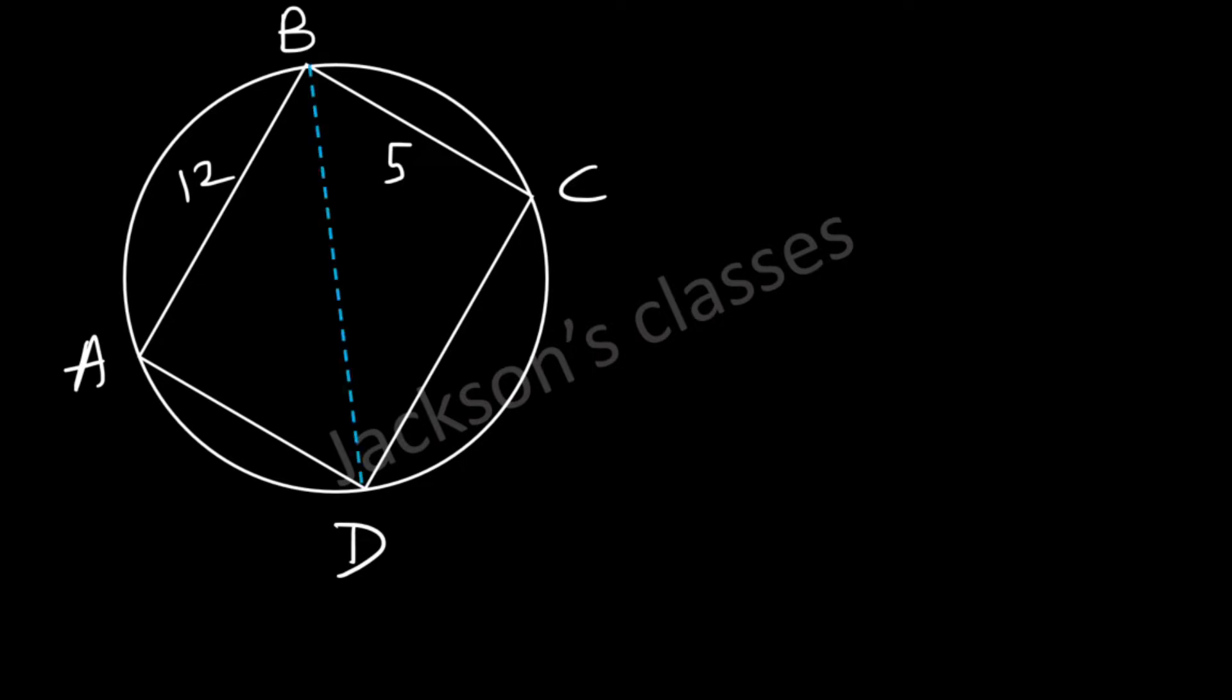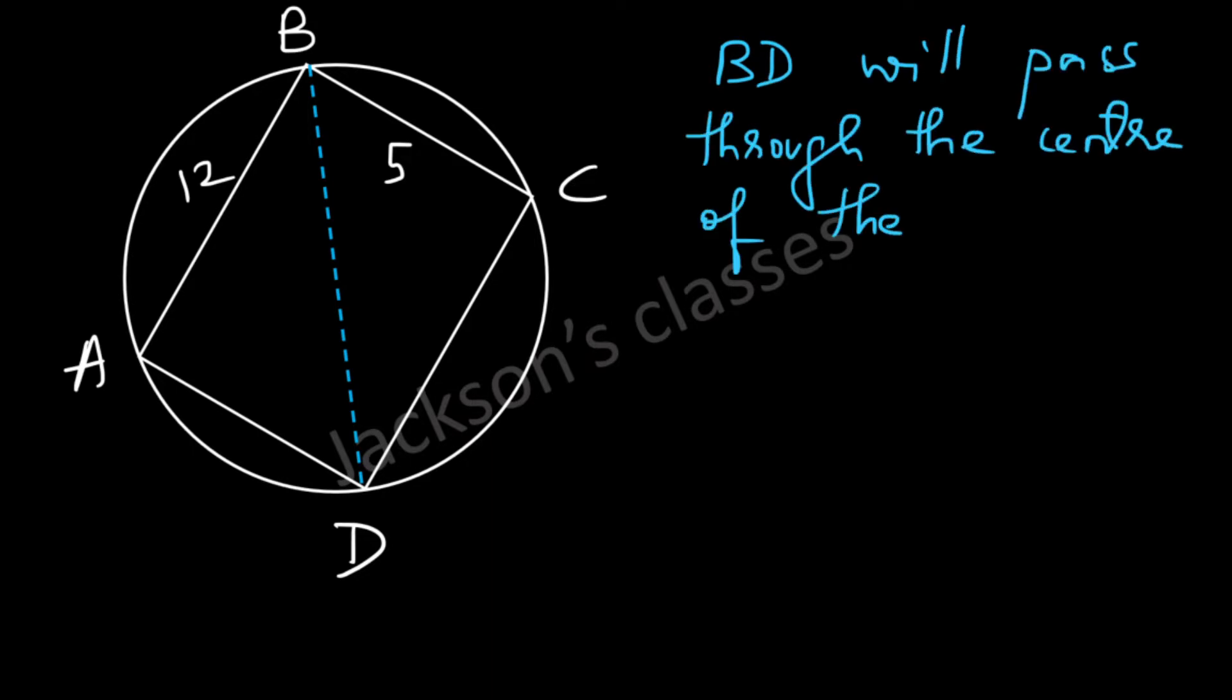Now let's join B and D, and BD will be passing through the center of the circle. Why is that so? Because ABCD is a rectangle, this angle over here is 90 degrees, and the angle subtended by the diameter of a circle will be 90 degrees. That means BD has to be the diameter or BD will be passing through the center of the circle.